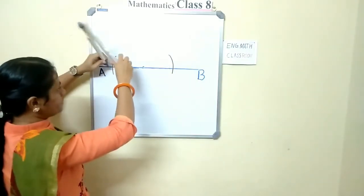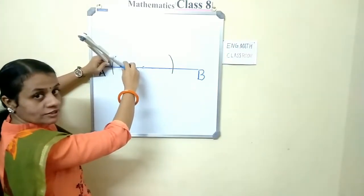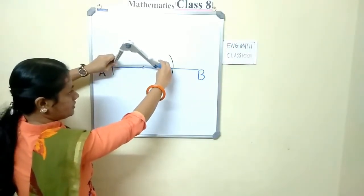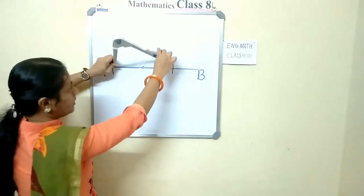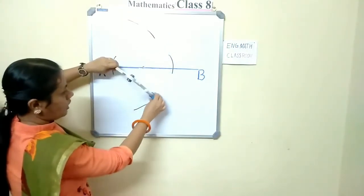Then, from this point, keep it at this point. Taking more than three-fourth distance. This much distance I have taken. Cut an arc upward. Same way, downwards.